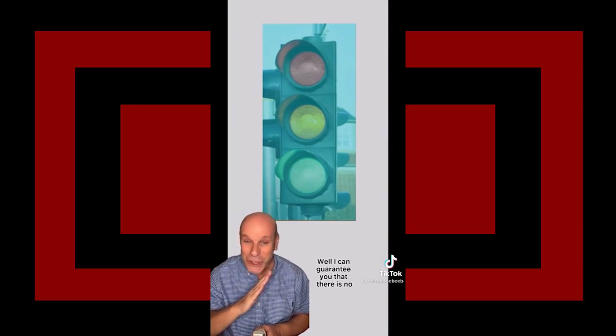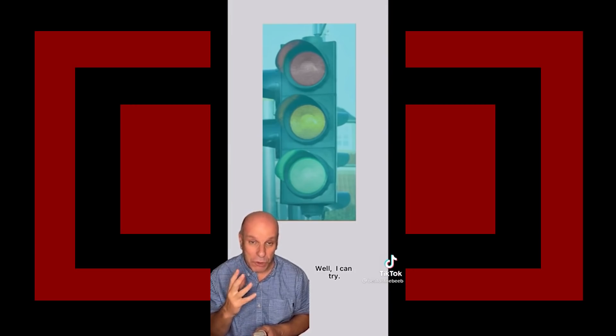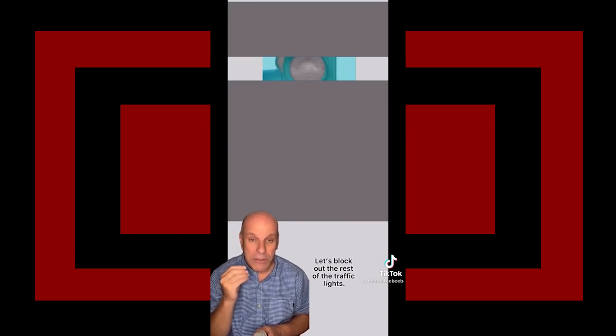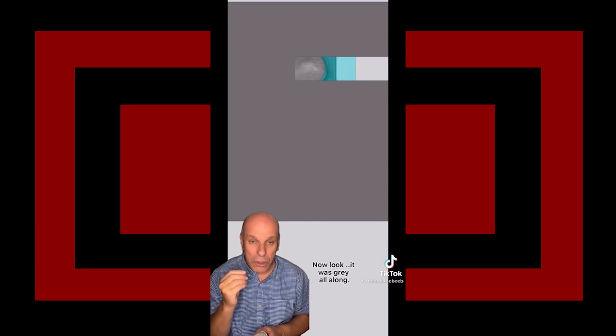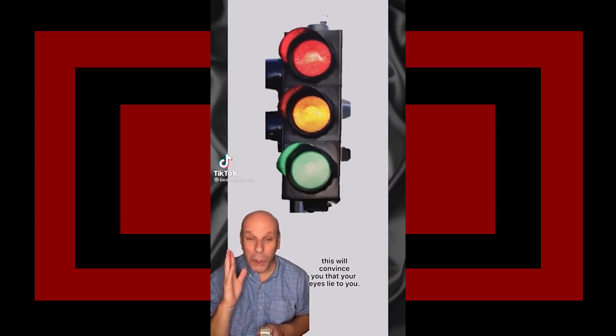Well, I can guarantee you that there is no red light there at all. There's no red at all. It's your brain working overtime convincing you of the red. Can I prove it? Well, I can try. Let's block out the rest of the traffic lights. Now look - it was gray all along. There is no red.